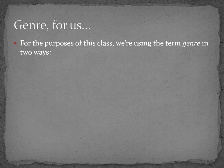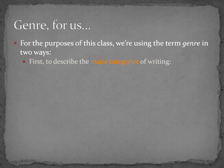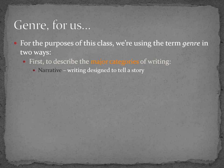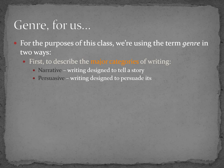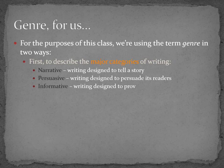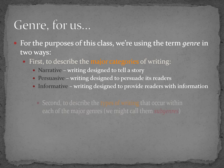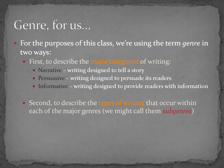For our purposes in this advanced writing class, we'll use the term genre in two ways. First, we use genre to describe the three major categories of writing outlined in your textbook: narrative writing, or writing that tells a story; persuasive writing, or writing designed to get its reader to do, think, or believe something; and informative writing, writing designed to share information. Second, we will also use the term genre or subgenre to identify the types of writing that occur within each of these major categories.